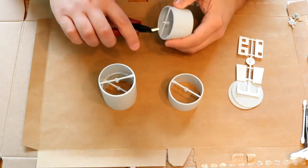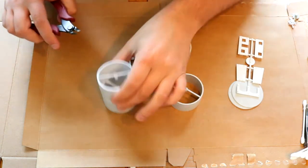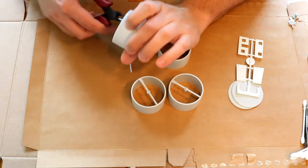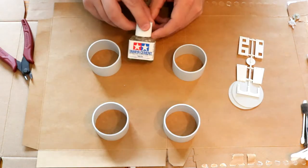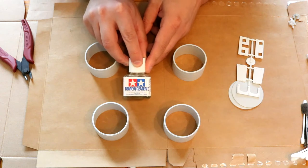First, I assembled the storage tanks. The fit was good right off the sprues. I only did some minor sanding and then they were ready for paint. As usual, I did use Tamiya's cement for the gluing.